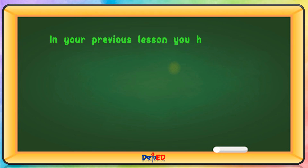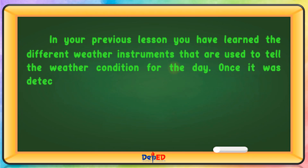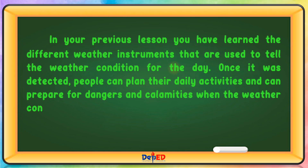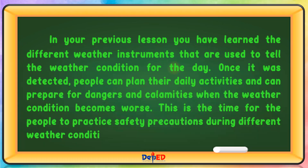In your previous lesson, you have learned the different weather instruments that are used to tell the weather condition for the day. Once it was detected, people can plan their daily activities and can prepare for dangers and calamities when the weather condition becomes worse. This is the time for people to practice safety precautions during different weather conditions.